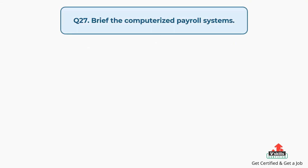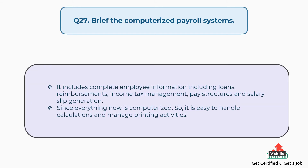Question number twenty-seven: Brief the computerized payroll systems. The answer is, it includes complete employee information including loans, reimbursements, income tax management, pay structures and salary slip generation. Since everything is now computerized, it is easy to handle calculations and manage printing activities.